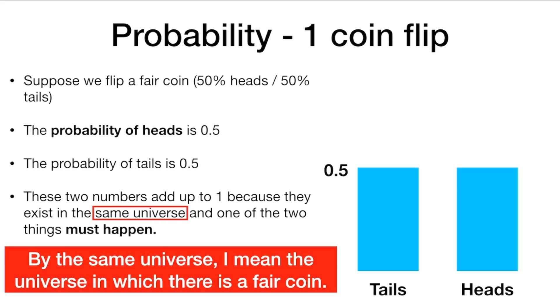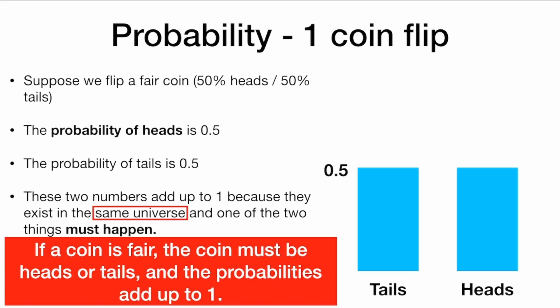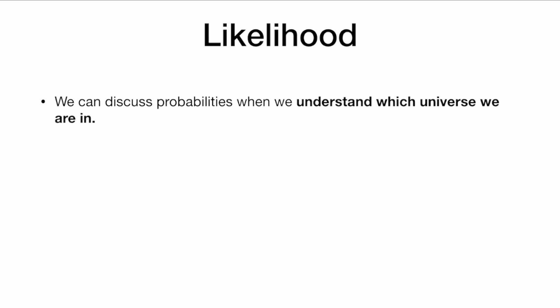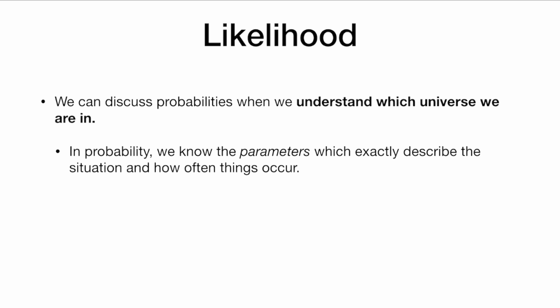By the same universe, I mean the universe in which we have a fair coin. If a coin is fair, the coin must be heads or tails. The probabilities must add up to one. We can discuss probabilities when we understand which universe we are in. In probability, we know the parameters which exactly describe the situation and how often things occur.